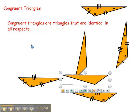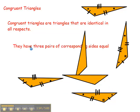Now if they're congruent, it means a couple of things. One, they have three pairs of corresponding sides equal.